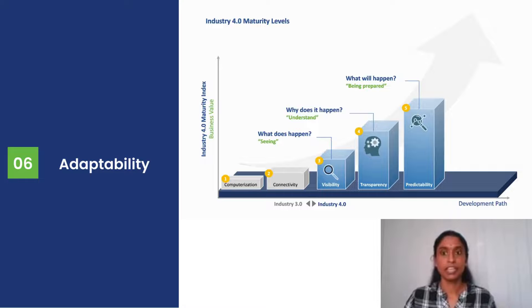The sixth level is Adaptability. This is the stage where the complete process or the complete organization is now autonomous.